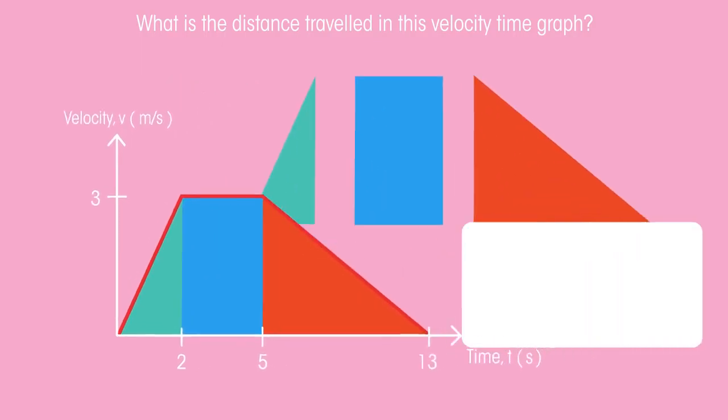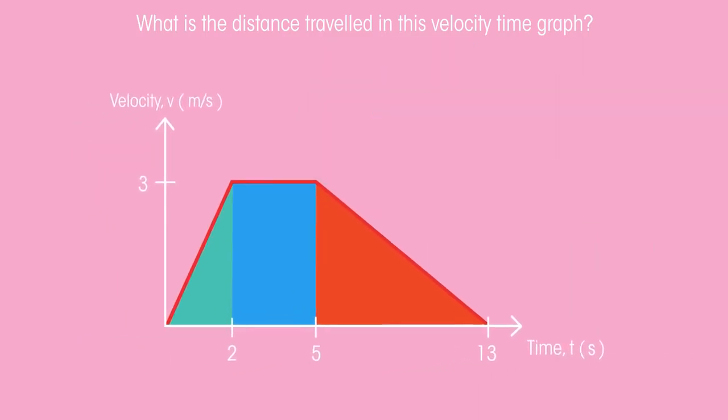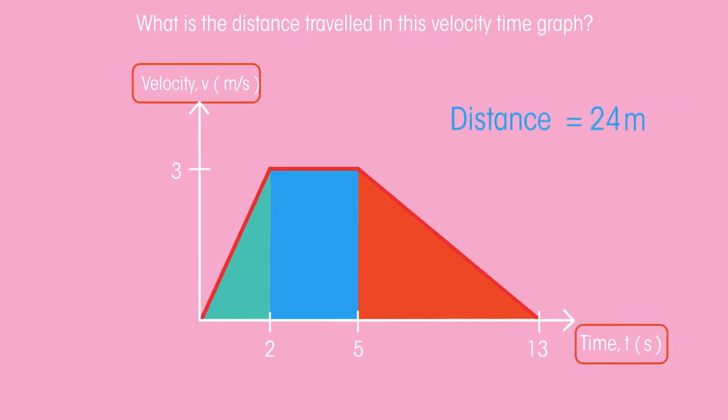Did you get it right? This means that for the journey shown by the velocity time graph, the object travelled a total distance of 24 metres. When doing these calculations, just be sure to check the units that you're given, because this will affect what unit you will give in your answer for the total distance. For this one, it was seconds and metres per second, so the distance in metres is correct.